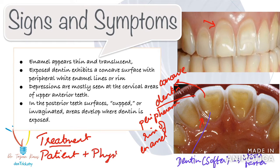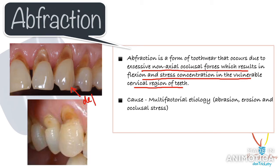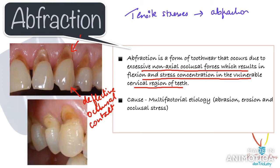Moving on, we have abfraction. This is something that is often confused with abrasion. Theoretically, abfraction occurs due to excessive non-axial occlusal forces which result in flexion and stress concentration in the vulnerable cervical region of teeth. In simple terms, any deflective occlusal contacts induce stress on the teeth, and if these forces are concentrated on a single tooth, the cervical area gives way as it is the weakest link. This leads to cracks in the enamel and dentine, followed by destruction of the remaining dental structure. Now, there is a huge controversy around this theory — tensile stress from malocclusion and masticatory forces were proposed as a primary factor, but this theory has no clinical evidence.